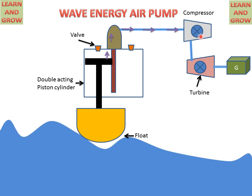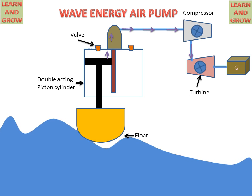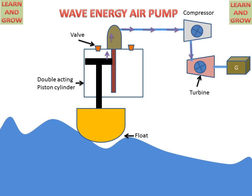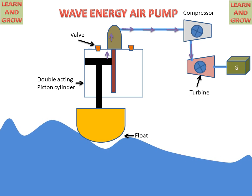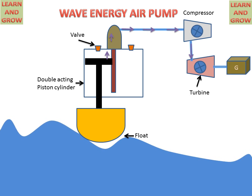The compressed air then reaches the turbine, and the turbine starts rotating. By the help of the turbine, mechanical energy is converted into electrical energy by the generator. This is the phenomenon of converting air energy into electrical energy.